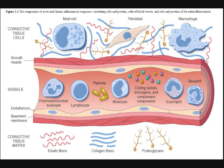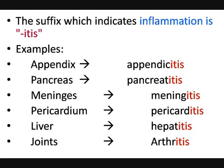Remember that whenever you refer to an inflammation, it always ends in the suffix '-itis.' For example, inflammation of the appendix is called appendicitis, inflammation of the pancreas is pancreatitis, inflammation of the meninges is meningitis, inflammation of the pericardium — the heart region between the two lungs — is pericarditis, inflammation of the liver is hepatitis, and inflammation of the joints is arthritis. That's basic medical terminology referring to inflammation.